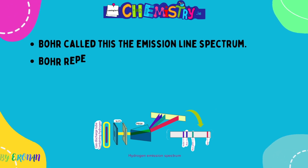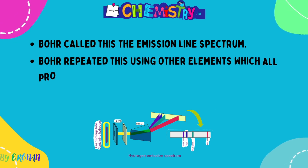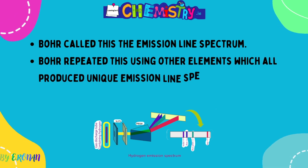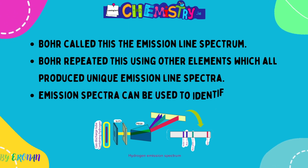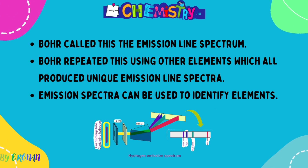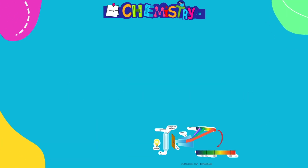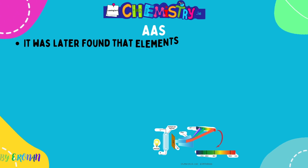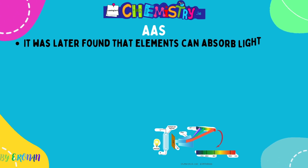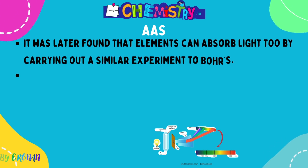Bohr called this an emission line spectrum, because the element hydrogen is emitting light. He repeated this experiment using other elements. Emission spectra can be used to identify elements because each element emits light of definite frequencies or wavelengths, and they differ from each other.